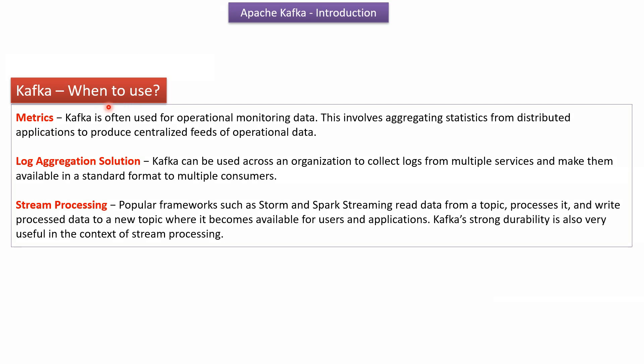Here we will see when to use Kafka. Metrics: Kafka is often used for operational monitoring data, involving aggregating statistics from distributed applications to produce a centralized feed of operational data. Log aggregation: Kafka can be used across an organization to collect logs from multiple services and make them available in a standard format for multiple consumers. Stream processing: Popular frameworks like Storm and Spark Streaming read data from a topic, process it, and write the processed data to a new topic where it becomes available for users and applications. Kafka has strong durability, making it very useful in the context of stream processing.